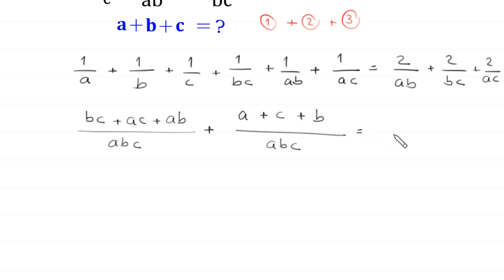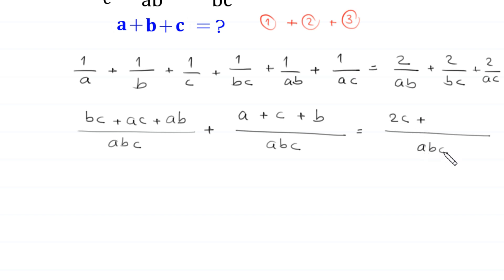The LCM of the three terms on the right is abc. LCM divided by ab is c, so c times 2 becomes 2c; divided by bc is a, so a times 2 becomes 2a; divided by ac is b, so b times 2 becomes 2b.